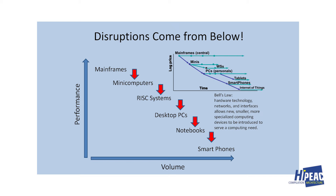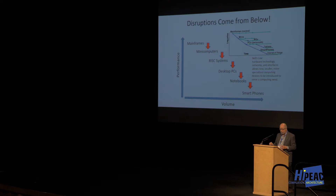Mainframes got eaten into by mini computers, those got eaten into by RISC systems mainly from Sun Microsystems, then desktop PCs, then notebook processors, and now it's the era of smartphone processors. In all of these transitions, the large systems were replaced by something with higher volume. Volume economics is what drives the industry and we're taking advantage of this in our designs.